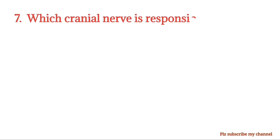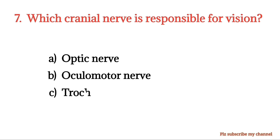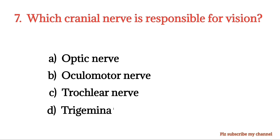MCQ number 7. Which cranial nerve is responsible for vision? Option A: Optic nerve. Option B: Oculomotor nerve. Option C: Trochlear nerve. Option D: Trigeminal nerve. The right option is Option A.